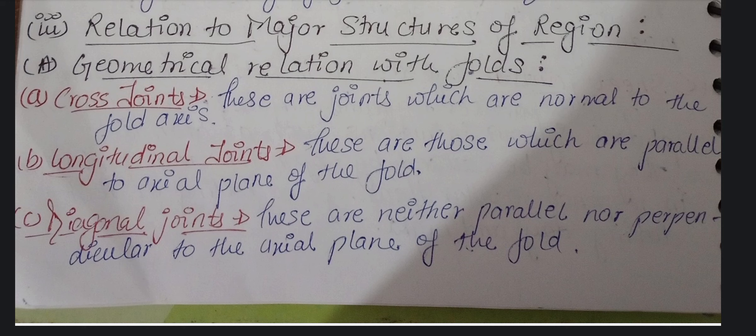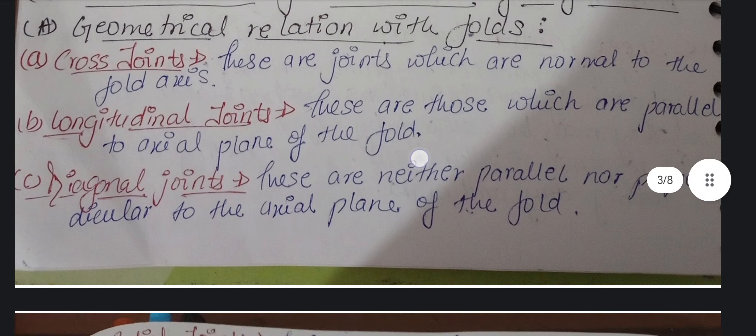Longitudinal joints are parallel to the fold axis. Diagonal joints are neither perpendicular nor parallel to the fold axis. Note the comparison with the first classification: in the attitude classification you respect the bedding plane, but here you respect the fold axis. The definitions are almost the same — strike joints are parallel to bedding, while longitudinal joints are parallel to the fold axis.